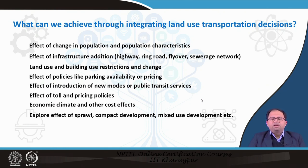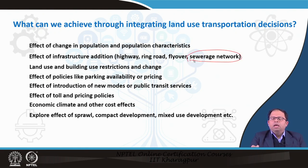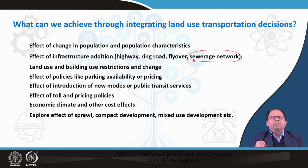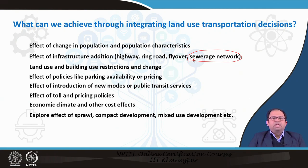We can also determine the effect of addition of a highway, ring road, flyover, or even a sewerage network in a particular urban area. For example, when we add a sewerage network, it may increase the carrying capacity of that area, meaning more people can come to and leave that place. That changes the attractiveness or accessibility of that particular area, which in turn leads to change in the transportation system. The effect of infrastructure addition is not straightforward — it affects land use and transportation by changing accessibility.